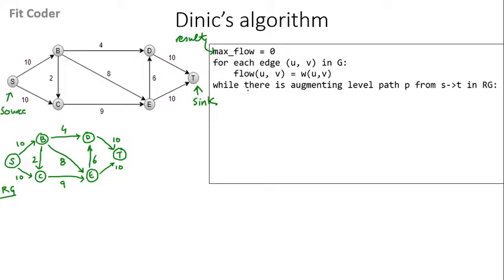When talking about the augmenting level path, we use BFS — breadth-first search. From the source vertex we spread in all directions. If 0 is the level of the source vertex, B and C are both one edge apart, so they are at level 1. D is one edge apart from B, so it is at level 2. Similarly, E is one edge apart from C, so it is also level 2. T is one edge apart from D and E, so it is at level 3. We have now assigned levels to each node.